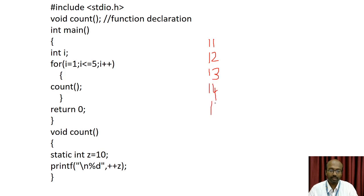After 15 is printed, i is incremented to 6. The condition 6 less than or equal to 5 is false, so the program stops execution, the value 0 is returned, and execution ends. This is the working of the static class specifier. Thank you.